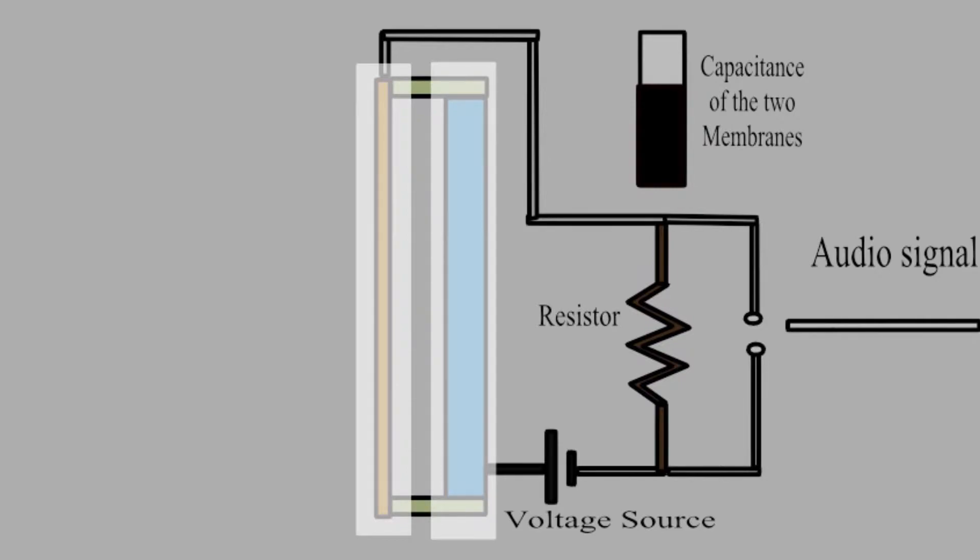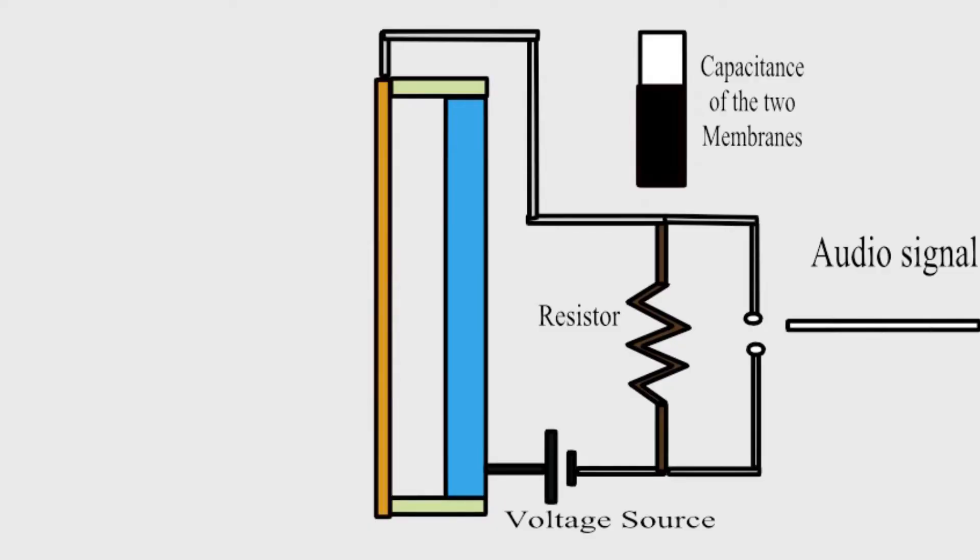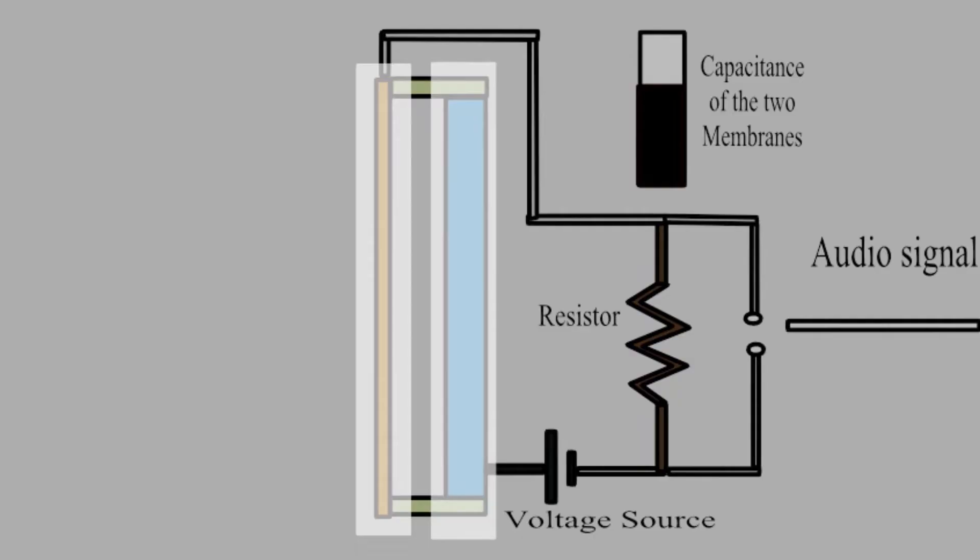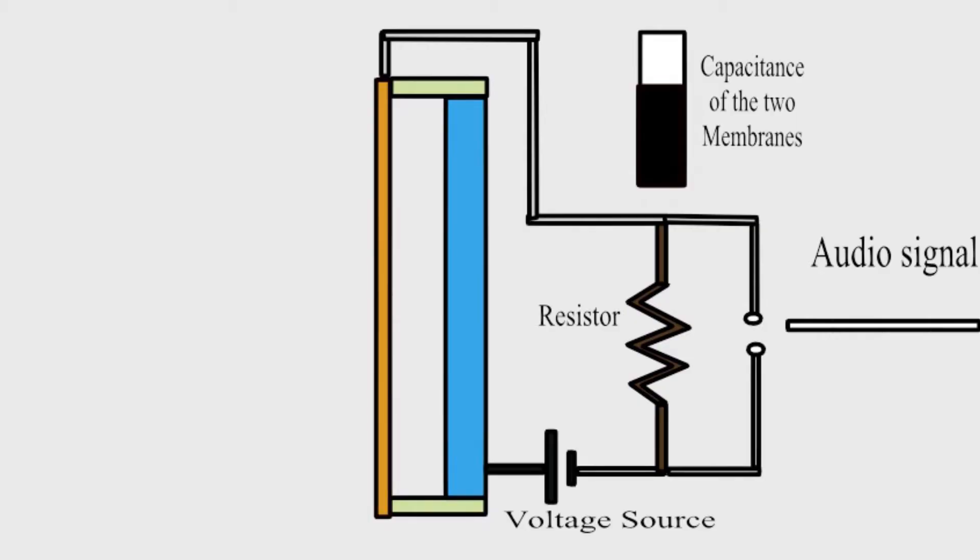In the condenser microphone, there are two metal plates separated by an insulator which is air. Similar to a capacitor because there are two metal plates in a capacitor separated by an insulator.